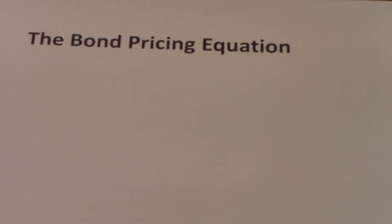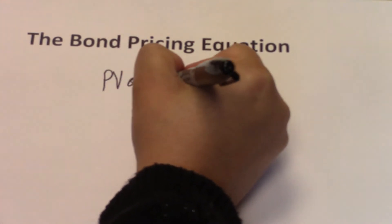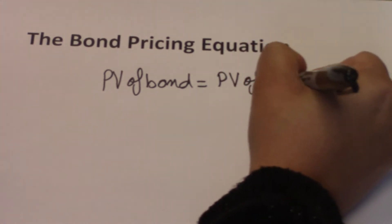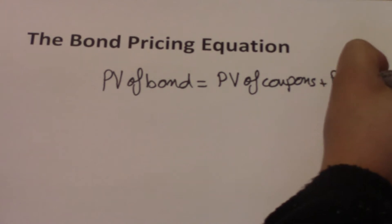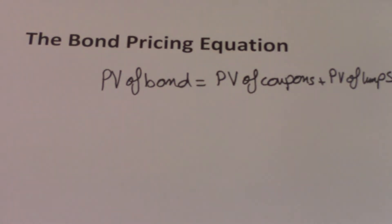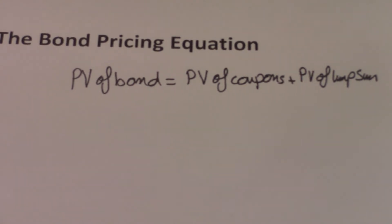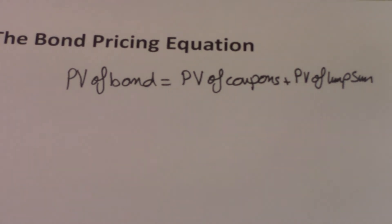The bond pricing equation. Here we are trying to determine the price of a bond, or the present value of a bond. The present value of a bond equals the present value of the coupons that the bond pays, plus the present value of the lump sum that the bond is going to pay at the end. We use the term lump sum, par value, or face value — all of these words can be used interchangeably.